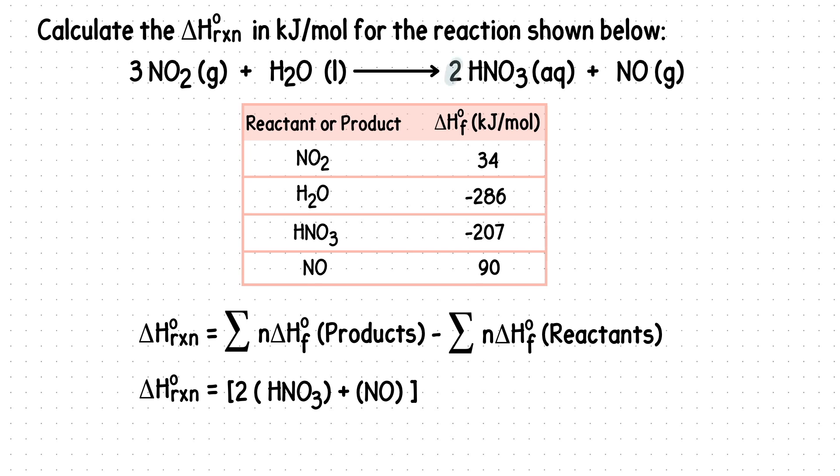we'll place the two coefficient in front of our first product. Then add the second product. Subtract this by our reactants. Bring this 3 down and place it in front of NO2. Then add the second reactant.